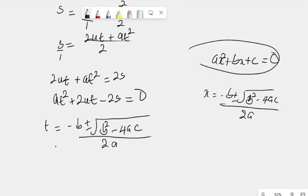Now, what is A here? A is equal to A, that is, the coefficient of T squared is our A here. So, in this case, it's also the same A. B is equal to 2U, this 2U here, and C is a constant of minus 2S, equal to minus 2S.